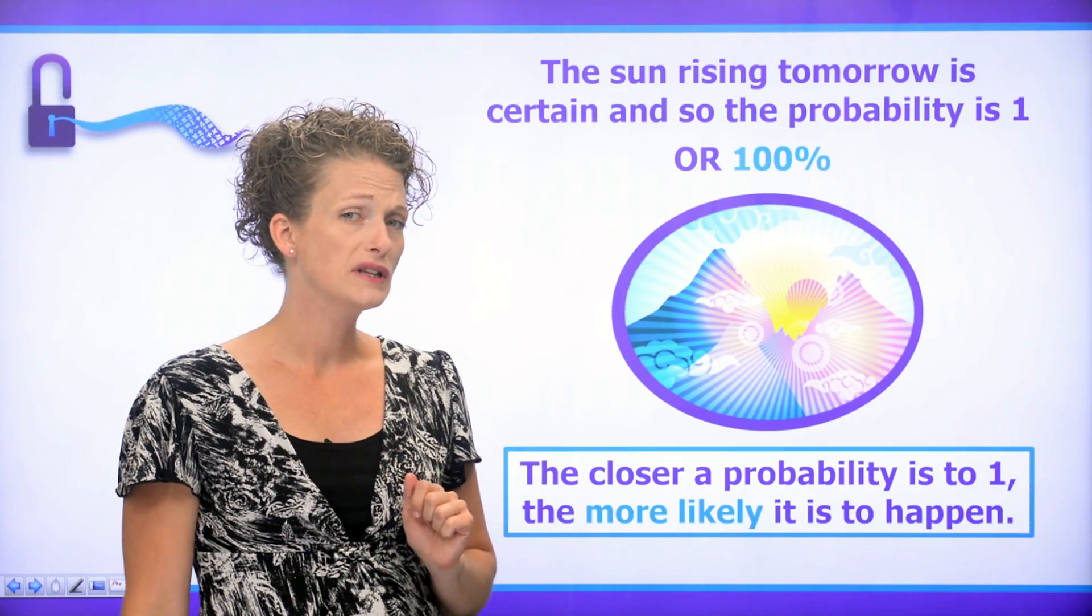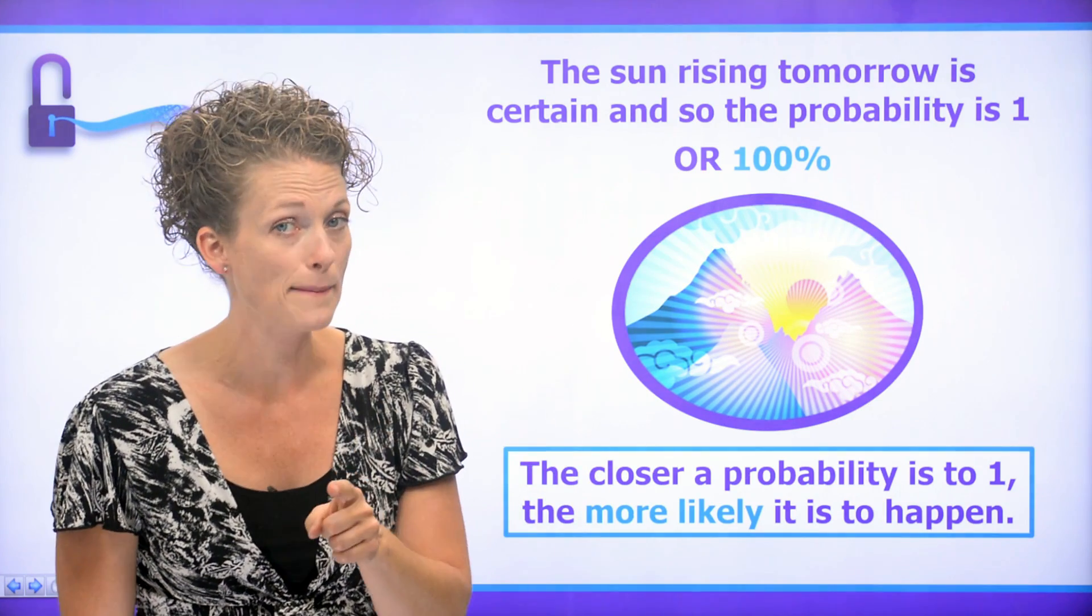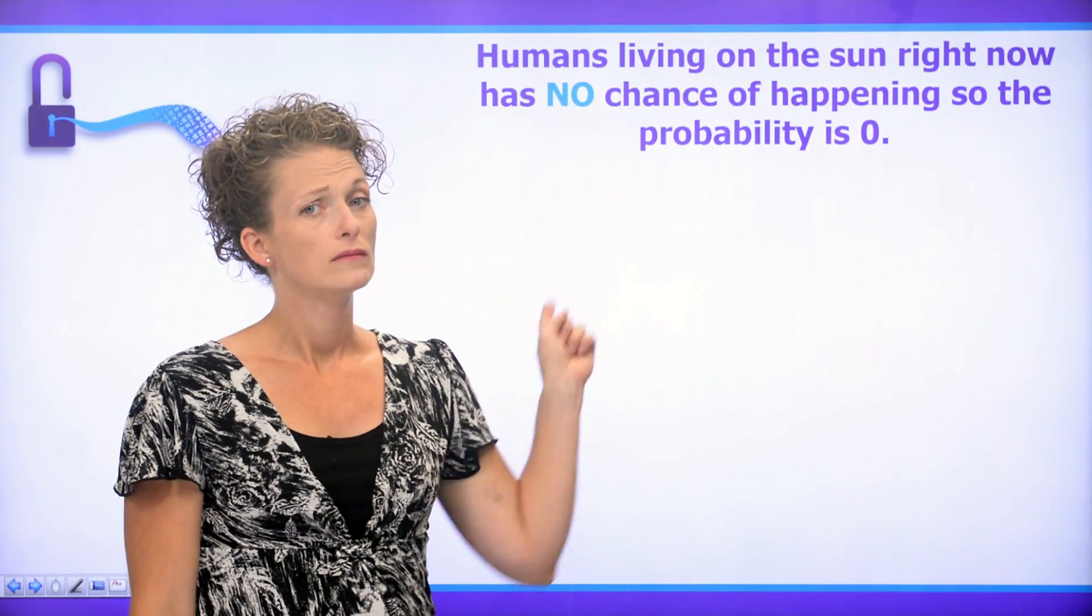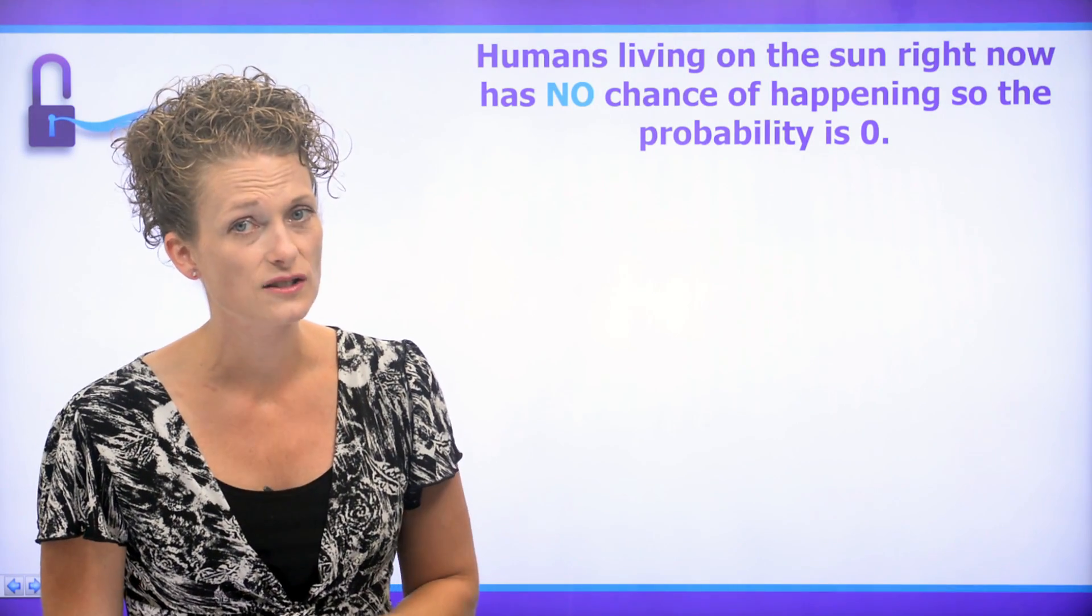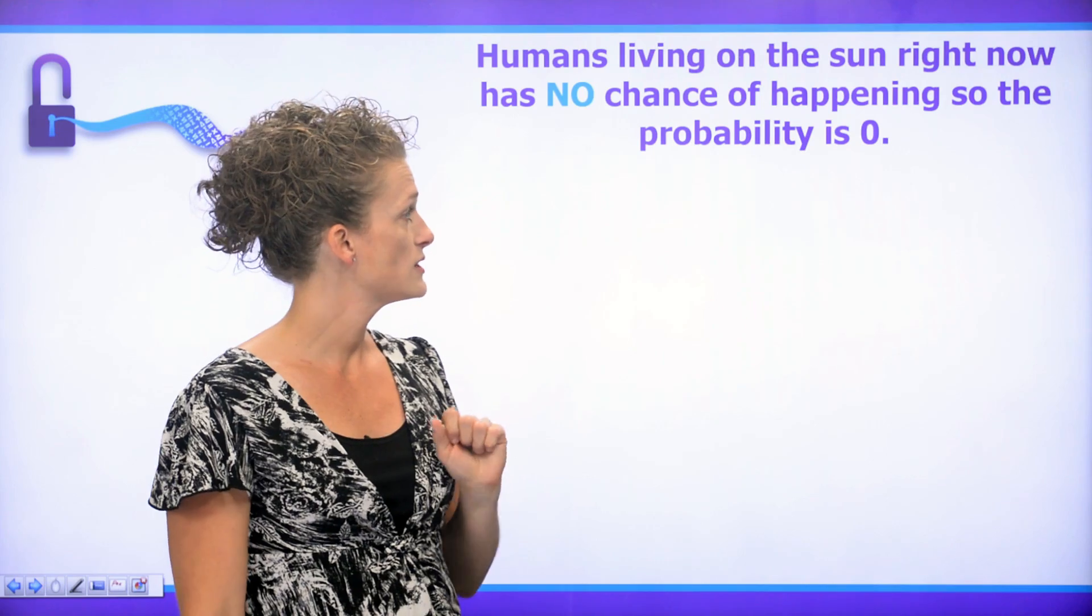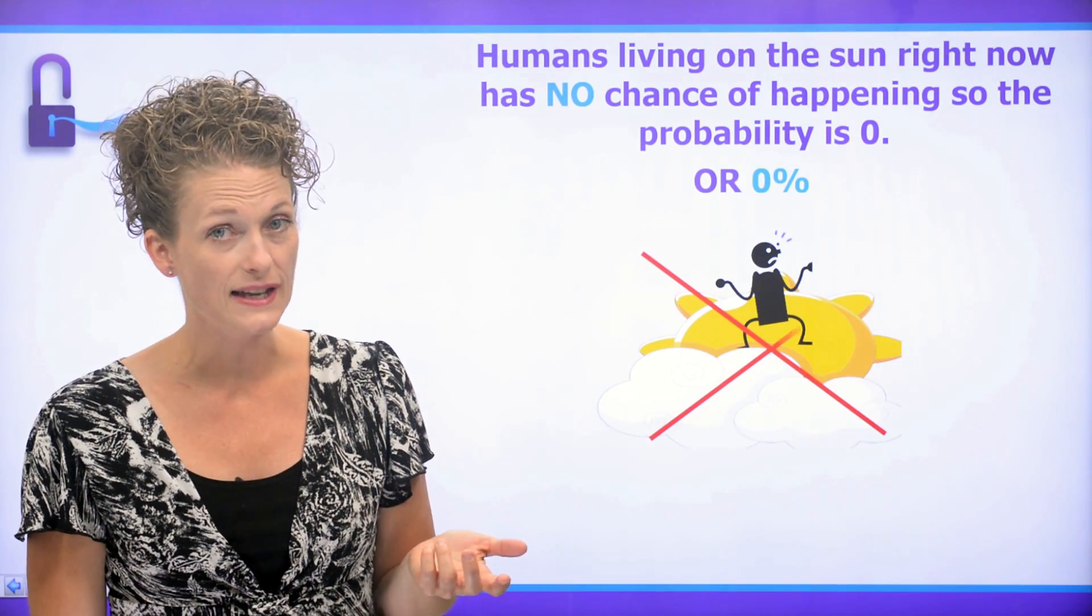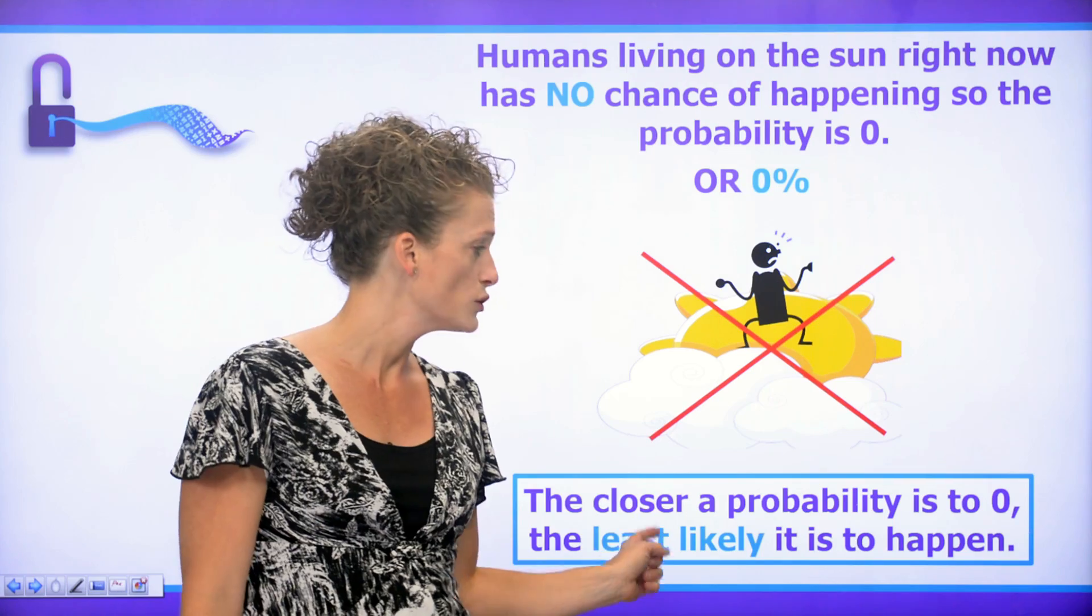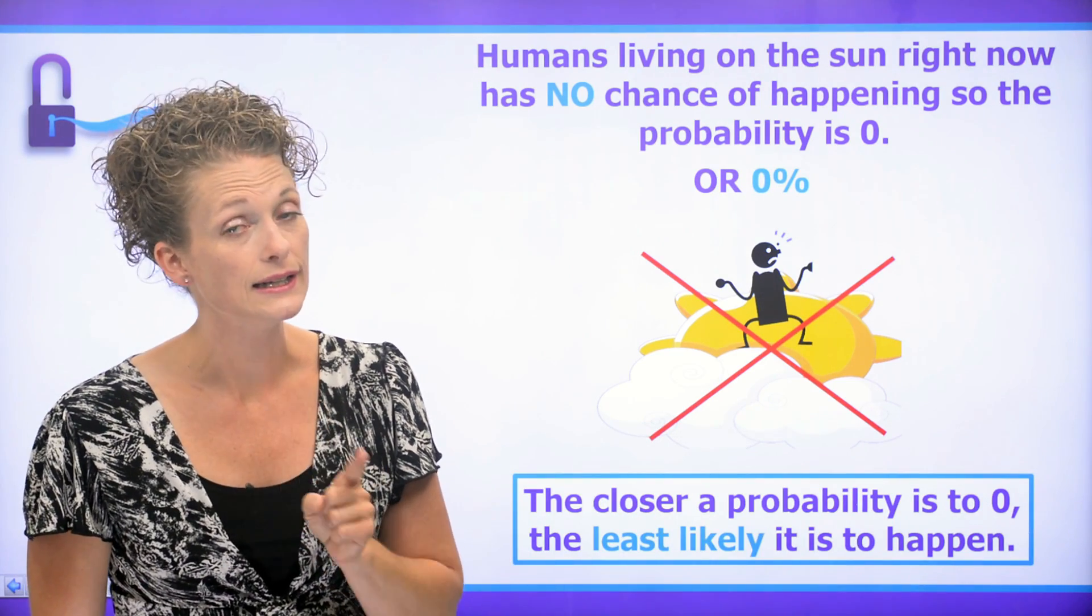The closer a probability is to 1, the more likely it is to happen. Well, we know that humans living on the sun right now, there is no chance that that is going to happen. The probability is 0, or 0%. So, the closer a probability is to 0, the least likely it is to happen.